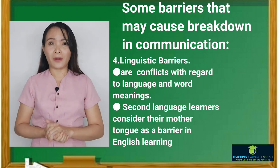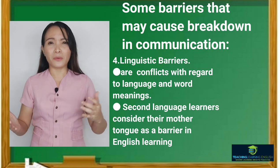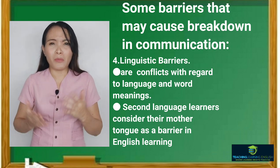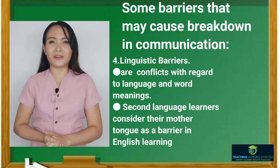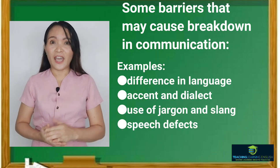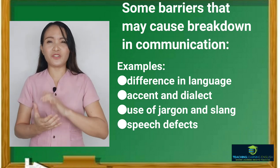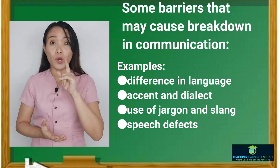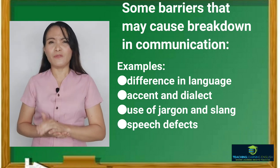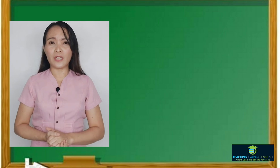The fourth is linguistic barriers — conflicts with regard to language and word meanings. Second language learners consider their mother tongue as a barrier in learning. Examples include differences in language, accent and dialect, use of jargon and slang, and speech defects. Your communication will be affected if you have teeth problems, even when pronouncing a word.